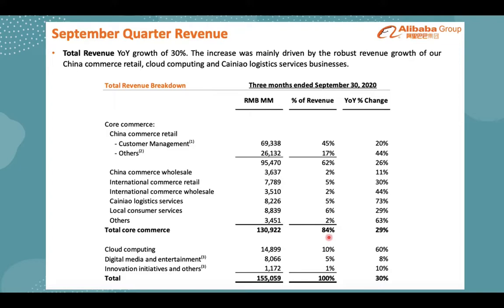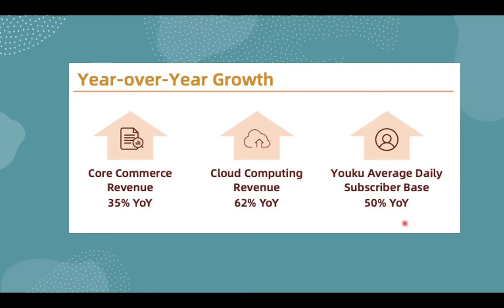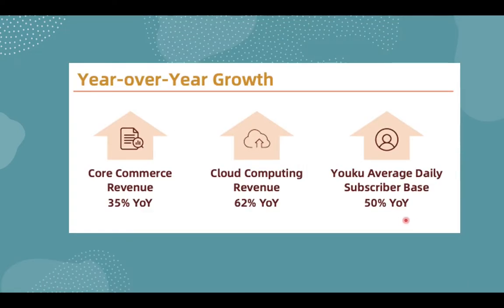Looking at their revenue breakdown: 84% of revenues come from e-commerce, cloud computing accounts for 10%, and digital media and entertainment is 5%. The e-commerce segment is growing at 29% year-over-year, while cloud computing is growing at 60% year-over-year. From their reports: core commerce revenue was up 35% year-over-year, cloud computing 62%, and Youku's subscription base increased by 50%. All their businesses are showing very strong growth.